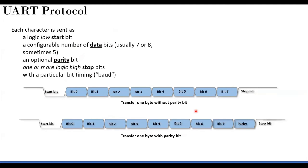Both transmitter and receiver must operate at the same bit rate — that is set by configuring the baud rate. A typical baud rate is 9600 bits per second or 115200. When you set up a serial terminal in Windows, Linux, or any environment, the baud rate you set is exactly the rate at which bits are being transmitted.